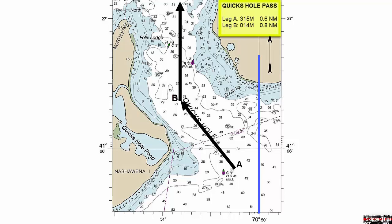Here the cartographer has drawn 70 degrees 50 minutes west onto our chart. Next, we want to measure from that grid line over to the northbound track. We find that longitude to be 70 degrees 50.8 minutes west.